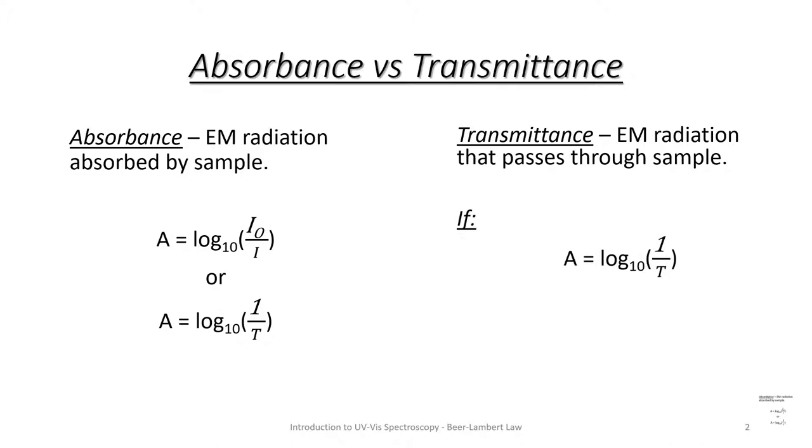Transmittance is the light that passes through the sample. So if A equals the log of 1 over transmittance, then transmittance is equal to light going out divided by the light going in.